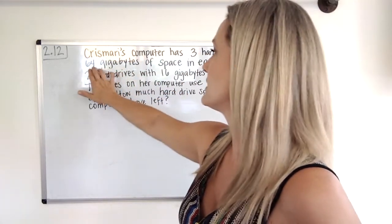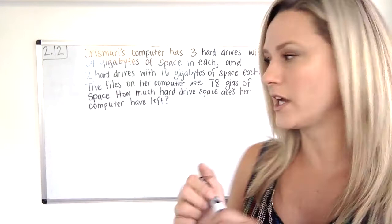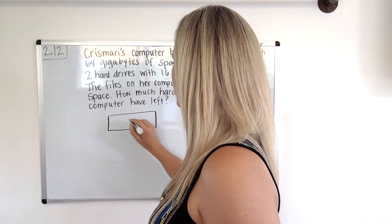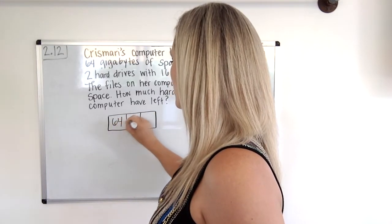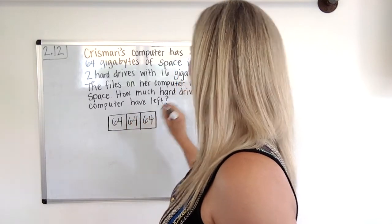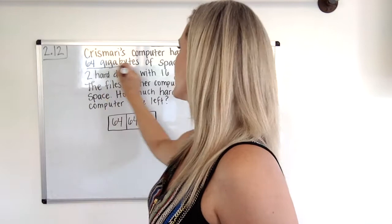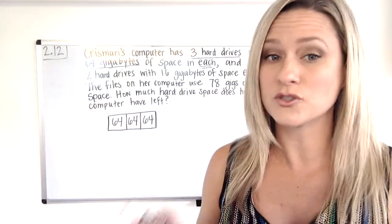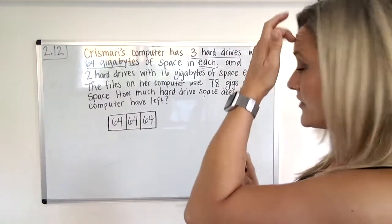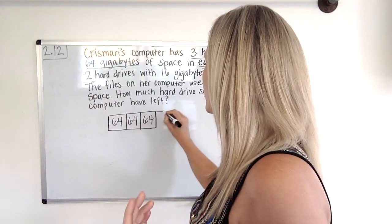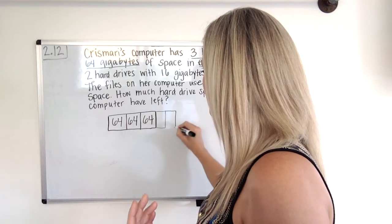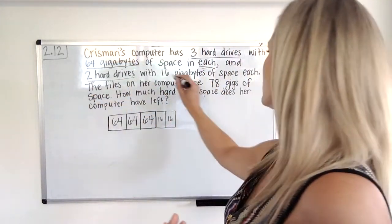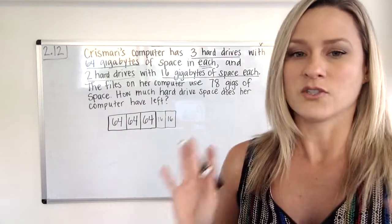Okay, so three hard drives, 64 gigabytes of space in each. Okay, so three hard drives, I'm going to draw. I think I'm just going to draw a bar model and then cut it into three sections. And write 64, 64, 64. Okay, so three hard drives, 64 gigabytes in each, right? So I had to put it in each one. Okay, now there's also two hard drives with 16 gigs of space in each one. So I also need 16 gigs to go into two hard drives. Okay, so I have that laid out.